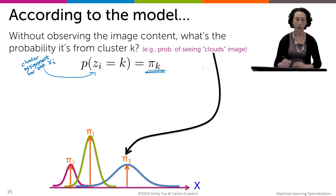This is fully specified by the mixture weight, pi_k, because that tells us how prevalent cloud images are in our dataset. If we don't observe the content of the image, then we just are caring about how many cloud images do we have relative to forest images, relative to sunset images. So we say that the prior probability that the ith image is assigned to cluster k is given by pi_k.